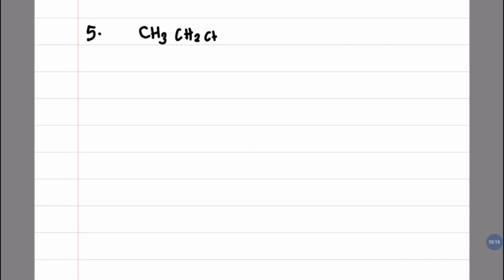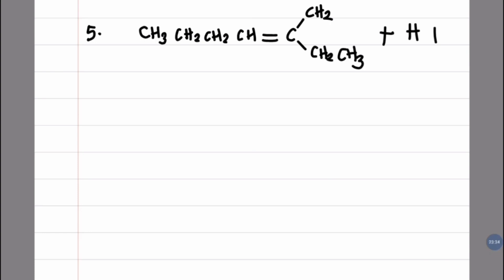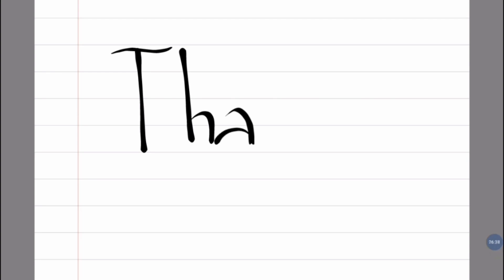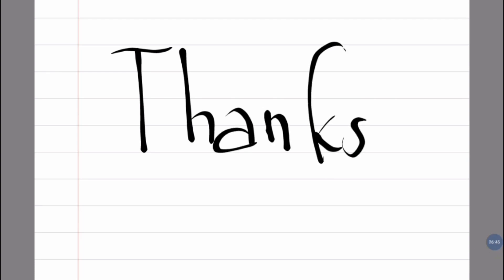Try to answer question number 5: CH3-CH2-CH2-CH2-CH=CH-CH2-CH3 plus HI. What is the name of the major product? Leave your answer in the comments below. Please like my videos and subscribe to my channel. Thank you.